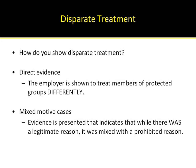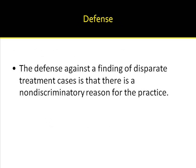Now let's turn to a consideration of disparate treatment. How do you show disparate treatment? One way is through the use of direct evidence — the employer is shown to treat members of protected groups differently, and evidence has to be presented. Another method is the so-called mixed motive cases, where evidence is presented indicating that while there was a legitimate reason, it was mixed with a prohibited reason. The defense that an employer can use against a finding of disparate treatment is that there was a legitimate, non-discriminatory reason for the practice.